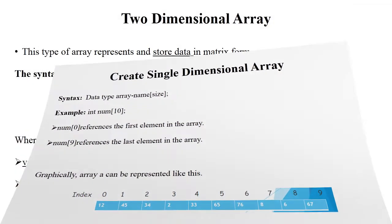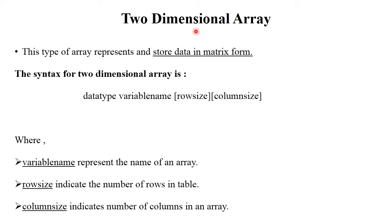The next type of array is multidimensional array, which includes two dimensional array. Dimensional means array size. This type of array represents and stores data in matrix format. The syntax of two dimensional array is: data type, variable name, row size, and column size. In one dimensional array, we store only elements in sequence. But in two dimensional array, we store row size and column size. Variable name represents the name of the array. Row size indicates number of rows in the table, and column size indicates number of columns.